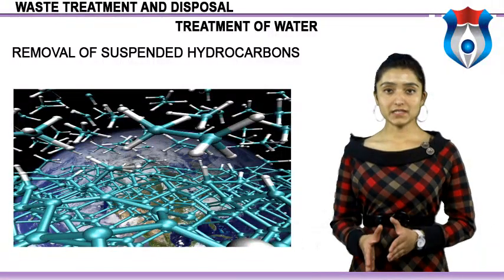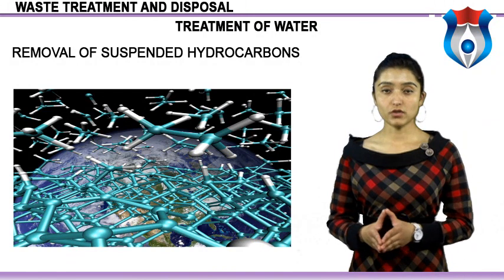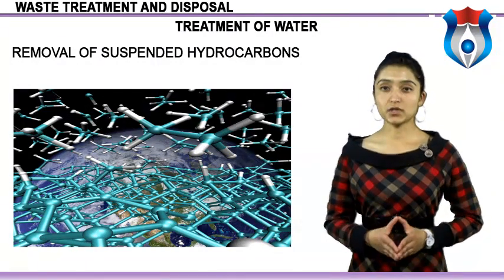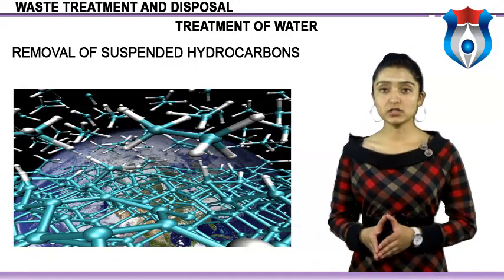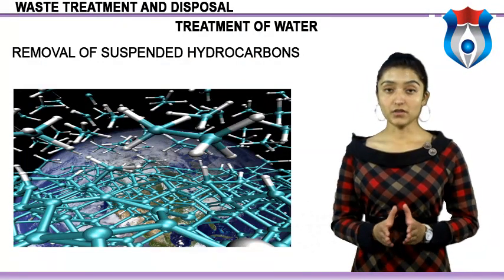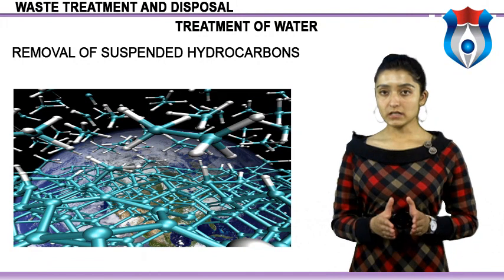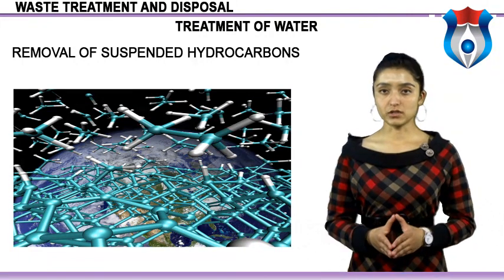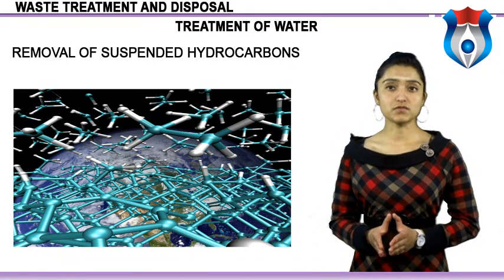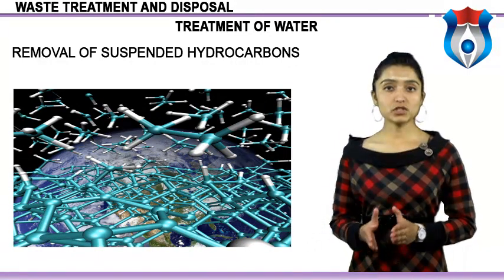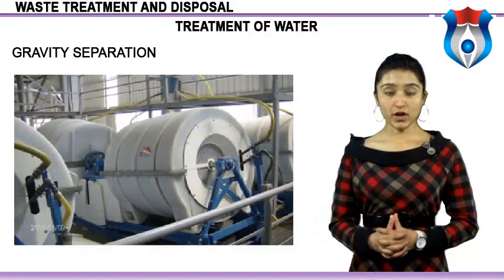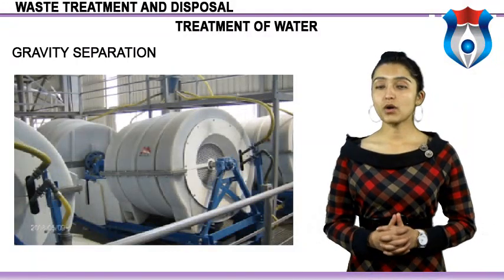Removal of suspended hydrocarbons: suspensions of oil droplets in water (emulsions) can be difficult to separate because they can be stabilized by the interfacial energy between the oil droplets and the continuous water phase. A variety of methods are available to remove suspended droplets from water, consisting primarily of variations of gravitational separation, filtration, or biological degradation. The first step in removal of hydrocarbons from water is normally gravity separation.